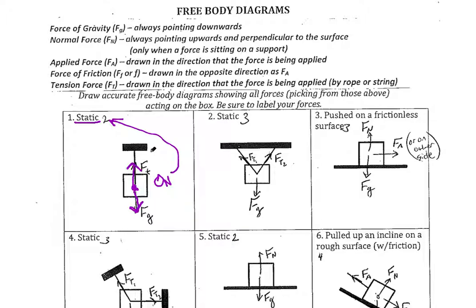For the second example, again, if you're not sure where to start, realize that gravity is going to be pulling the object down. There's going to be something resisting gravity, and it's these two strings or ropes here that are providing the force of tension to resist the force of gravity.